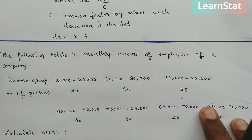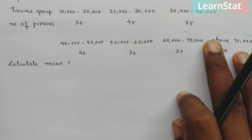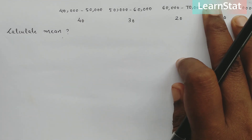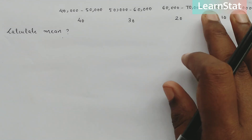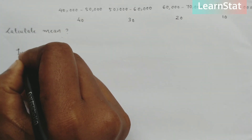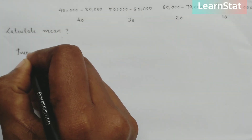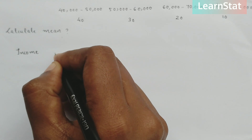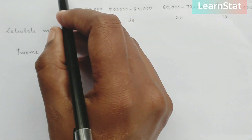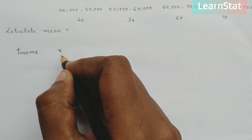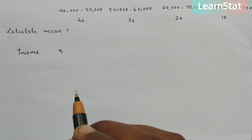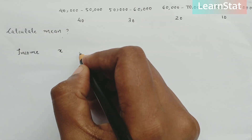Let us do a problem and calculate the mean. We will set up a table with the following columns: income (class interval), mid-x, frequency, and dx. This is the shortcut method column, and we will also include an assumed mean column.